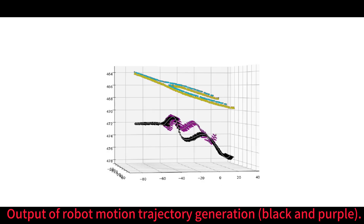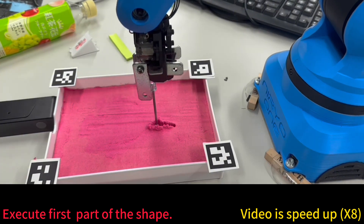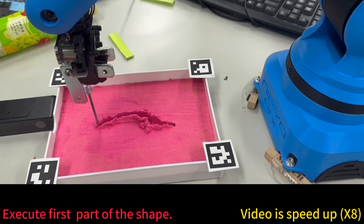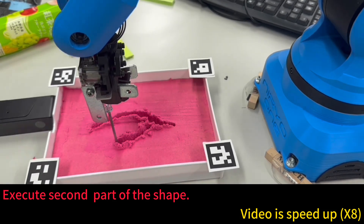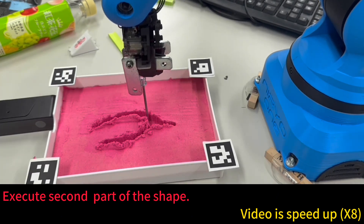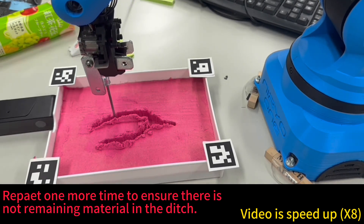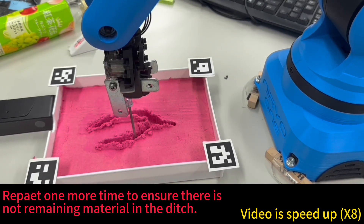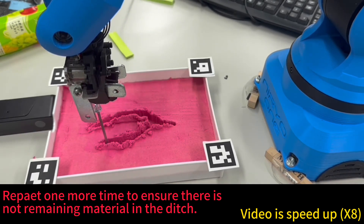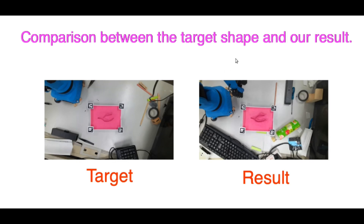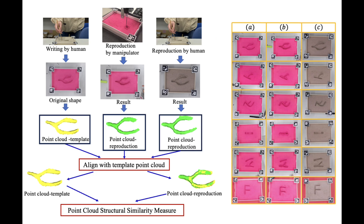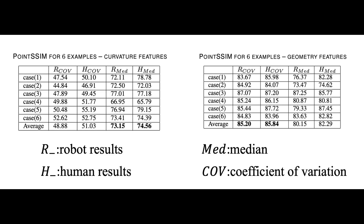The details are provided in the paper. The generated trajectories are executed in order by a 6 degree of freedom robot. If any material remains in the ditch, the execution process is repeated one more time. The overall performance of our approach was validated by comparing the reproductions with human-produced shapes using the point cloud structural similarity measure. Based on the results from various scenarios and different volunteers, we conclude that humans and robots demonstrated comparable accuracy in task reproduction.